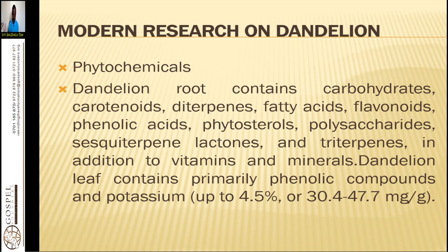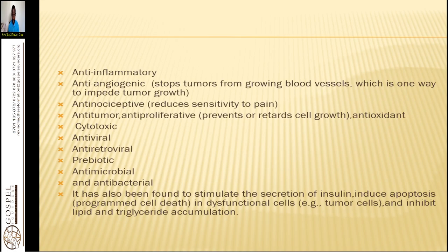Dandelion leaf contains primary phenolic compounds and potassium, which makes it very useful for your system. In an environment where your system has plenty of potassium, you cannot develop cysts or cancer, because cancer cannot grow in an environment that has potassium. Most people are sick from cancers and cysts because of low potassium in their systems. The foods we eat either deplete potassium or don't contain it at all.